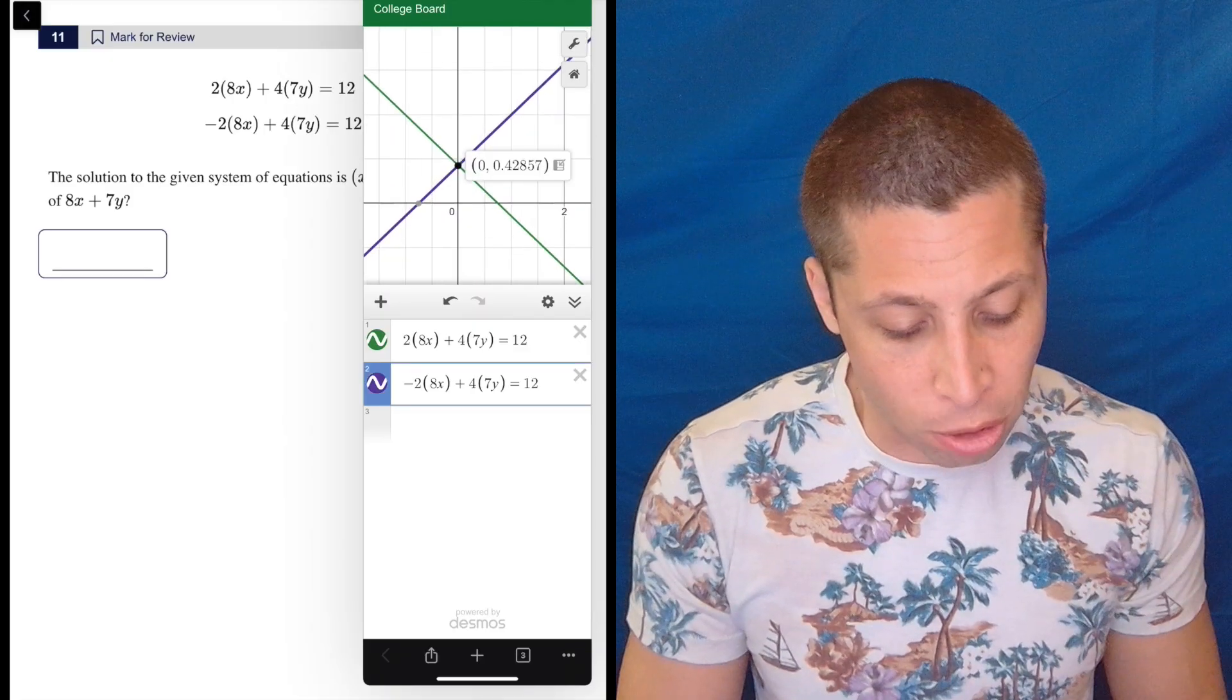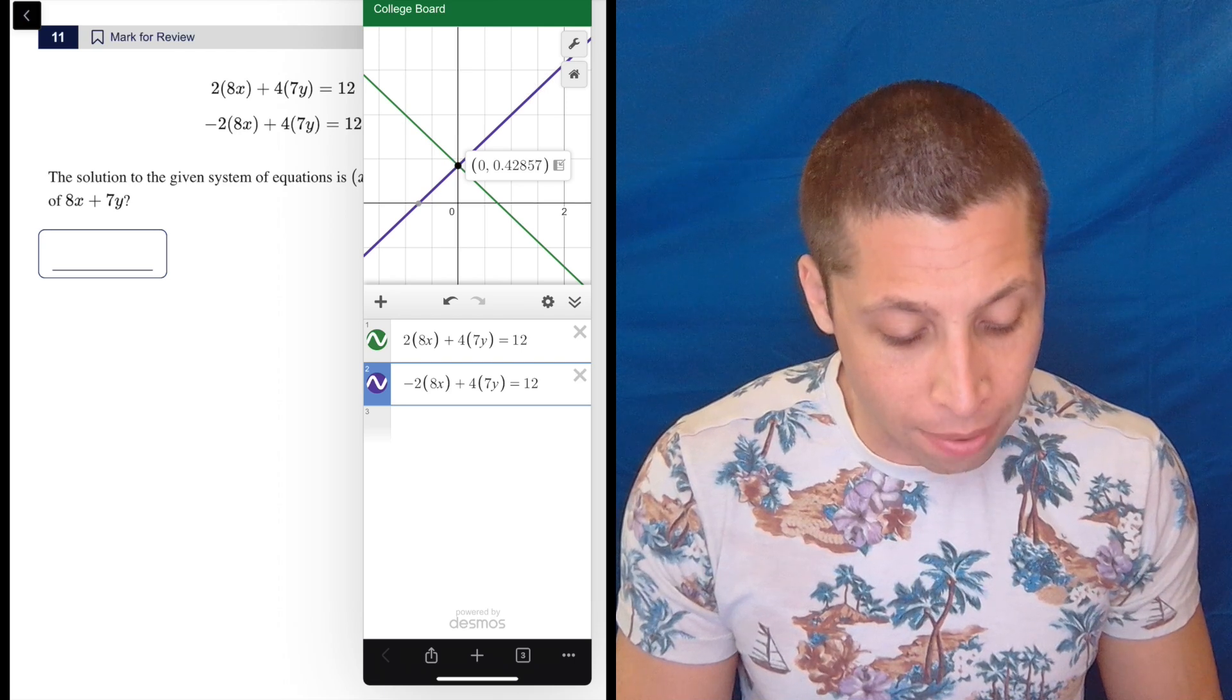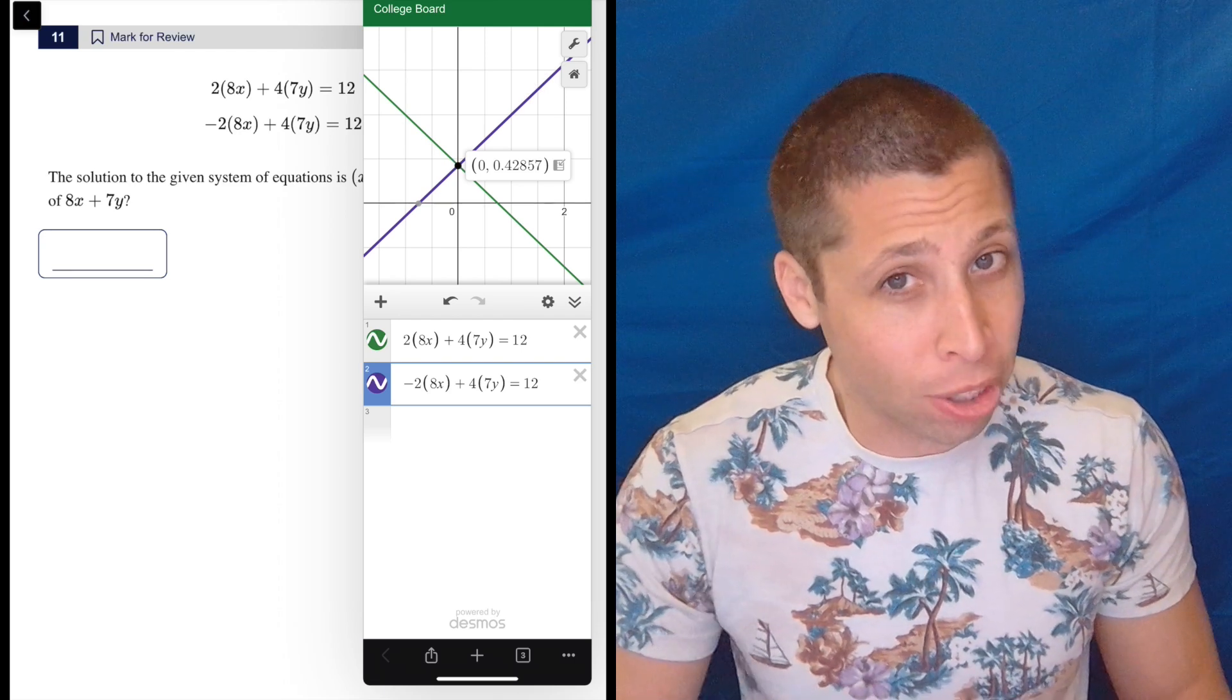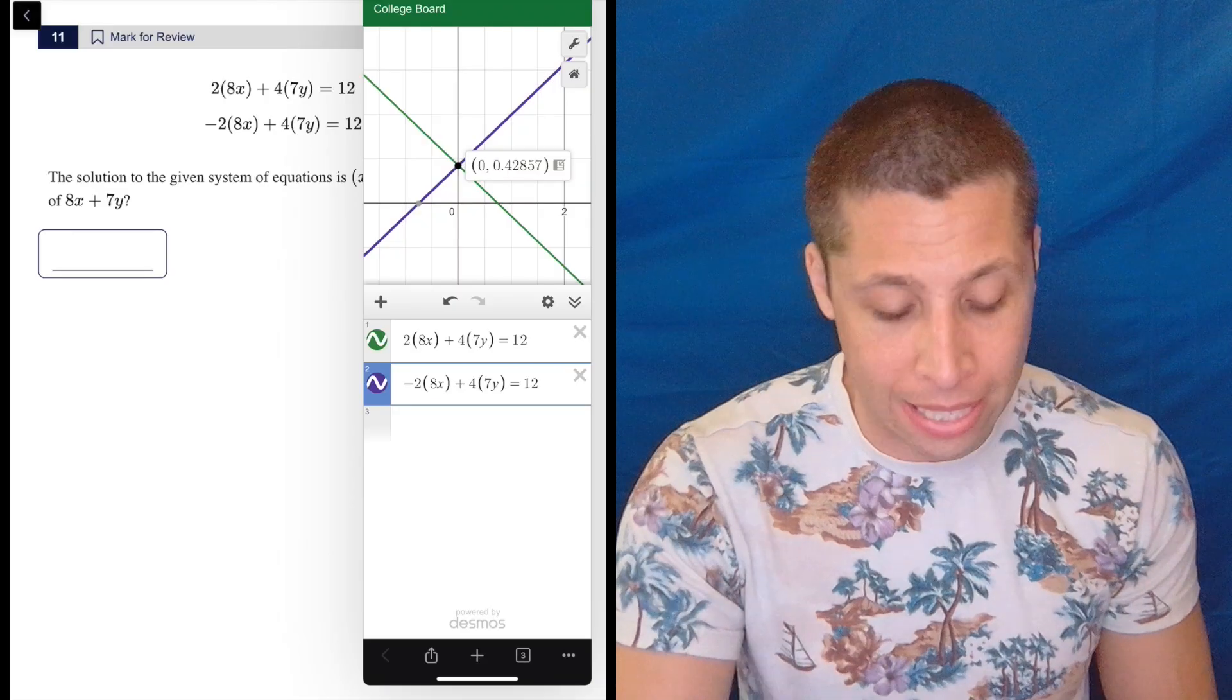And yes, it is on the Y axis. So my point here is zero, zero point four two eight five seven. So that's a fraction I don't recognize, right? Point four two eight five seven. It was a bunch of threes, point three three three, I'm like, oh, that's a third. That's easy.